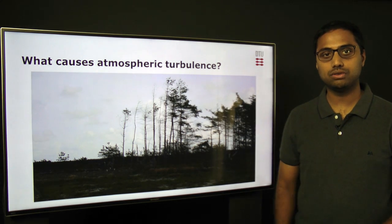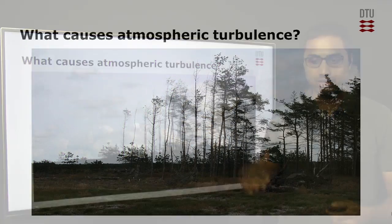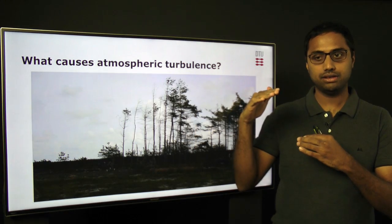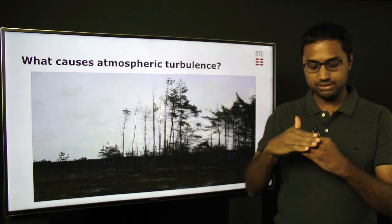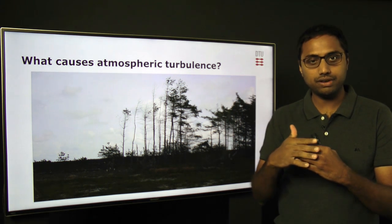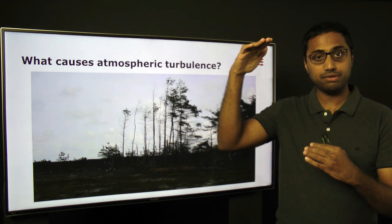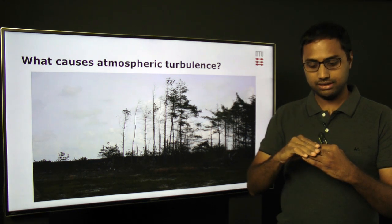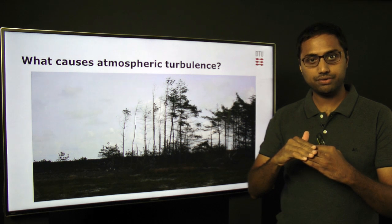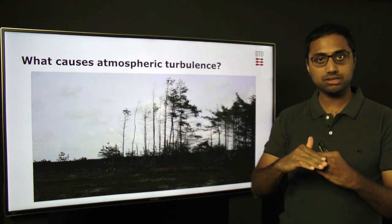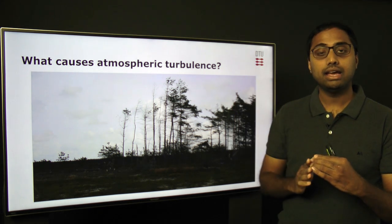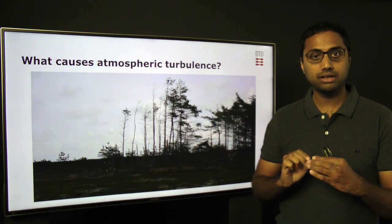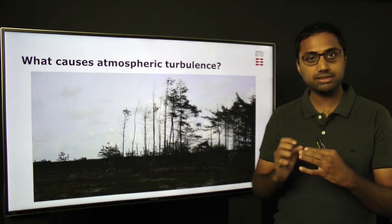Now we come to the question of what causes atmospheric turbulence. We can imagine air parcels in the atmosphere stacked on top of each other. Air parcels very close to the ground have almost no velocity, while air parcels further away from the ground have a large velocity. This creates a gradient in wind speed from the ground upward, and this gradient is what causes atmospheric turbulence or mixing of the air parcels.